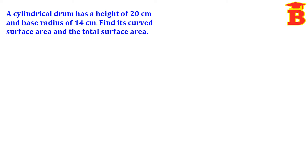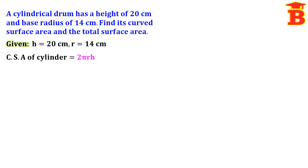Next problem. A cylindrical drum has a height of 20 centimeter and base radius of 14 centimeter. Find its curved surface area and total surface area. Using CSA formula 2 pi R H: 2 into (22 by 7) into 14 into 20. Canceling 7 and 14, and multiplying the remaining numbers, we get 1760 centimeter square. Area is always a square unit.